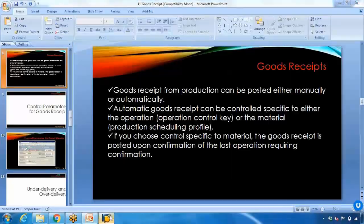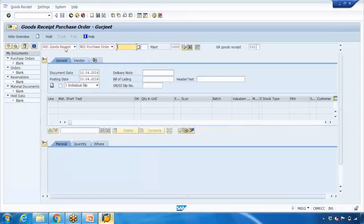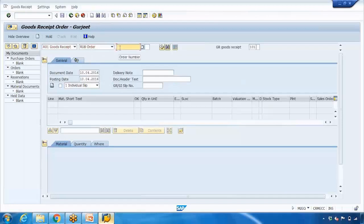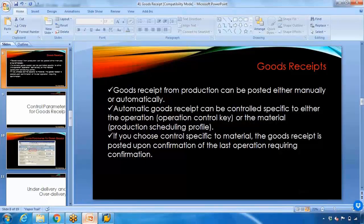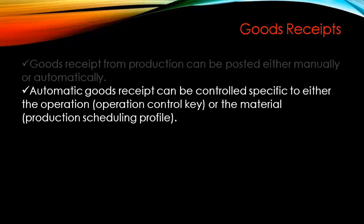Let me show you MIGO again. In MIGO you can select 'Goods Receipt for Order' and enter the production order number. Alternatively, it can be done automatically. Automatic Goods Receipt can be controlled either at the operation control key level — using PP03 — or via the production scheduling profile assigned in the material master.